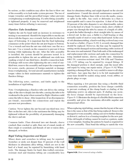Rigid tubing inspection and repair: minor dents and scratches in tubing may be repaired. Scratches or nicks not deeper than 10% of the wall thickness in aluminum alloy tubing, which are not in the heel of a bend, may be repaired by burnishing with hand tools. The damage limits for hard, thin-walled corrosion-resistant steel and titanium tubing are considerably less than for aluminum tubing and depend on the aircraft manufacturer; consult the aircraft maintenance manual for damage limits. Replace lines with severe die marks, seams, or splits in the tube. Any crack or deformity in a flare is unacceptable and is cause for rejection. A dent of less than 20% of the tube diameter is not objectionable unless it is in the heel of a bend. To remove dents, draw a bullet of proper size through the tube by means of a length of cable, or push the bullet through a short straight tube by means of a dowel rod.